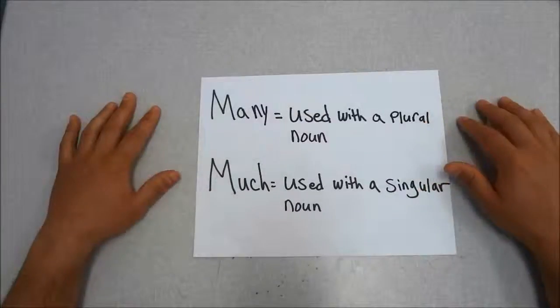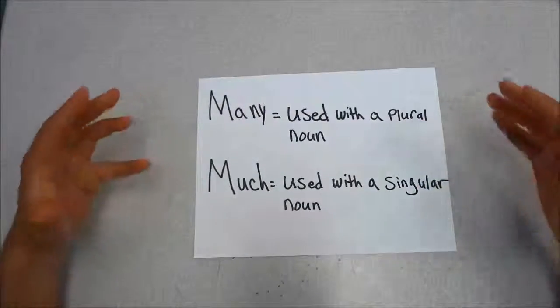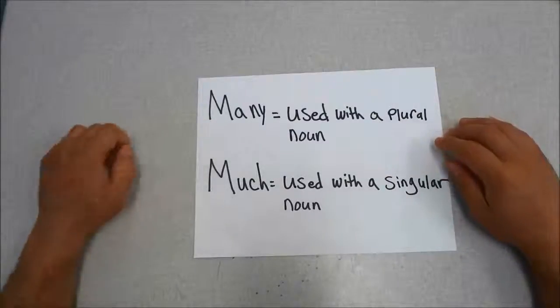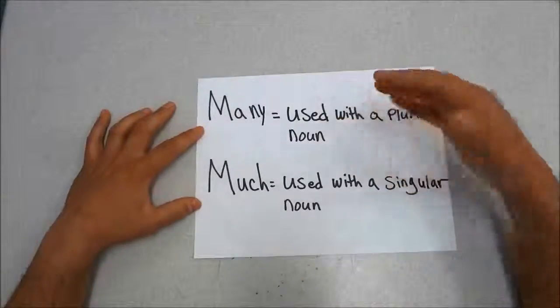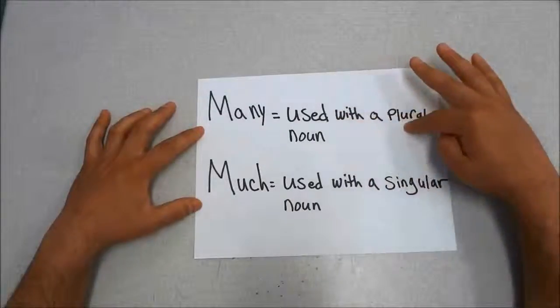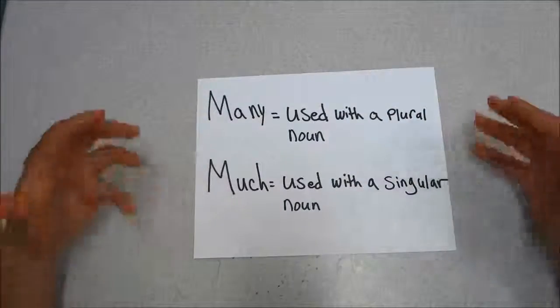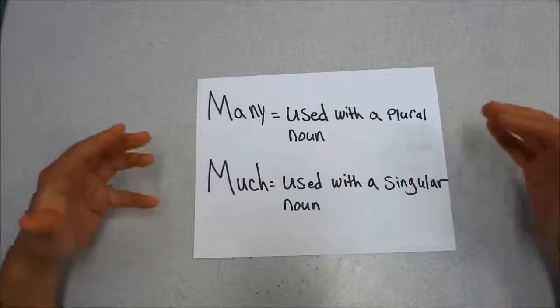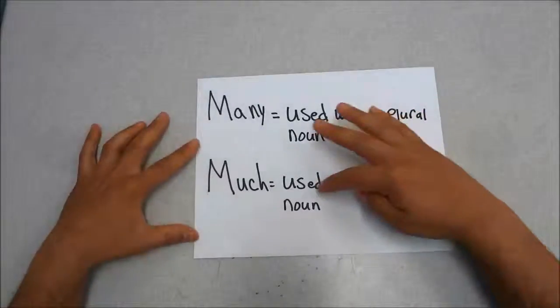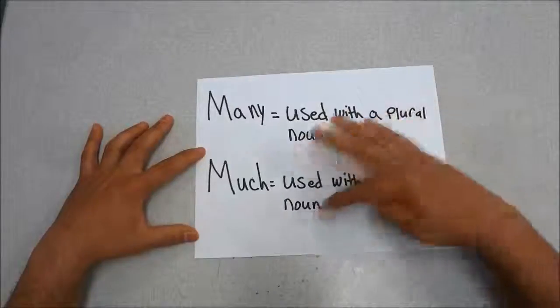The main difference is what they are used to describe a lot of. The word many is used to describe a lot when being used with a plural noun. The word much, on the other hand, is used to describe a lot when being used with a singular noun.